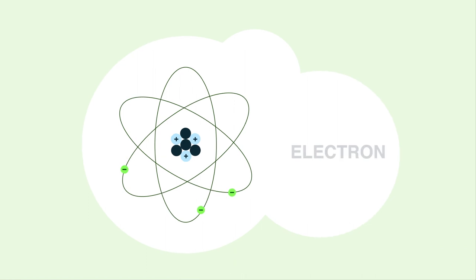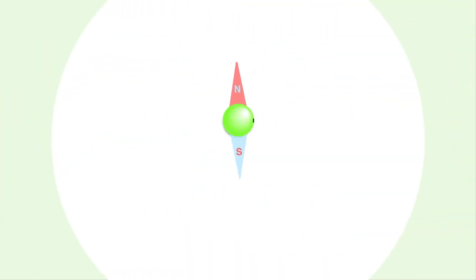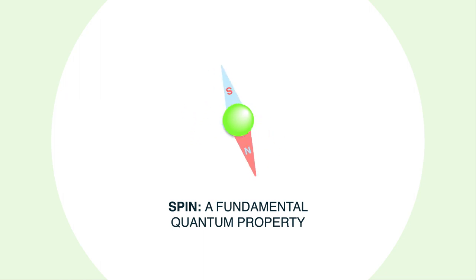The matter around us is held together by electromagnetic forces related to the presence of electrons. Due to a fundamental quantum property called spin, every electron behaves as a little magnet.